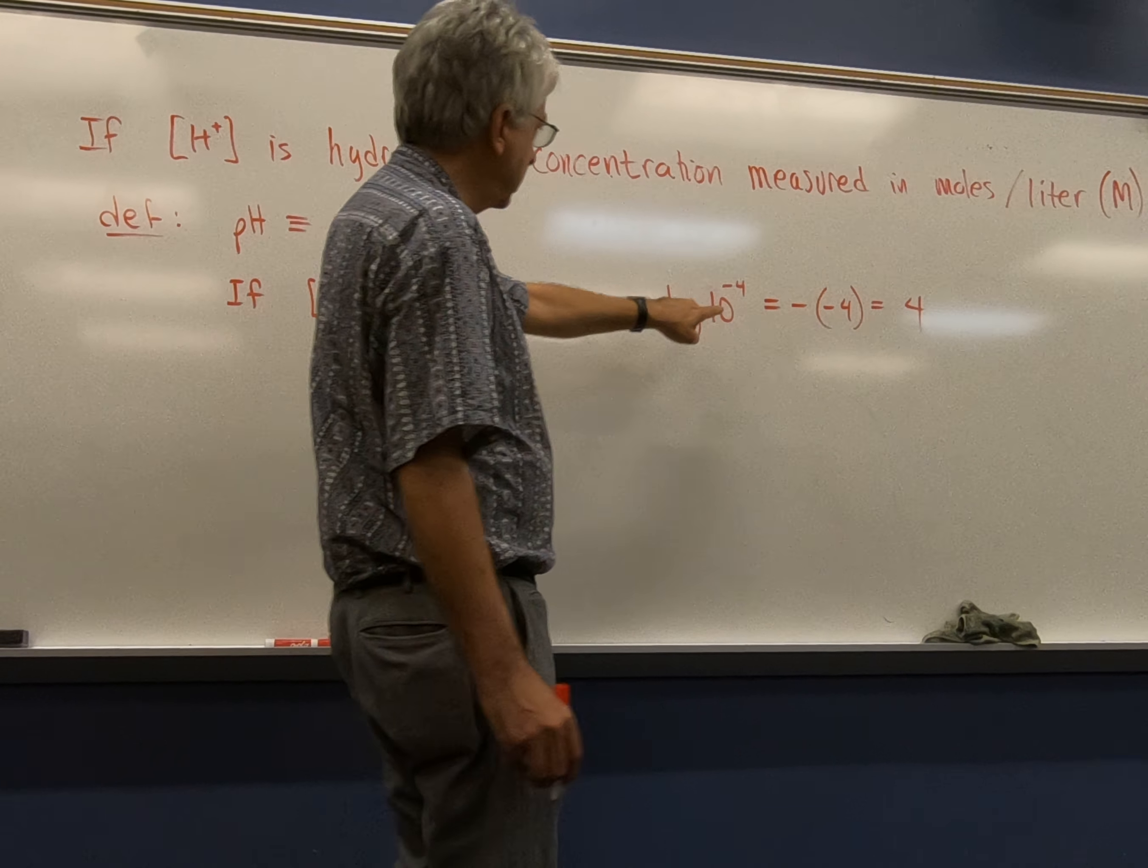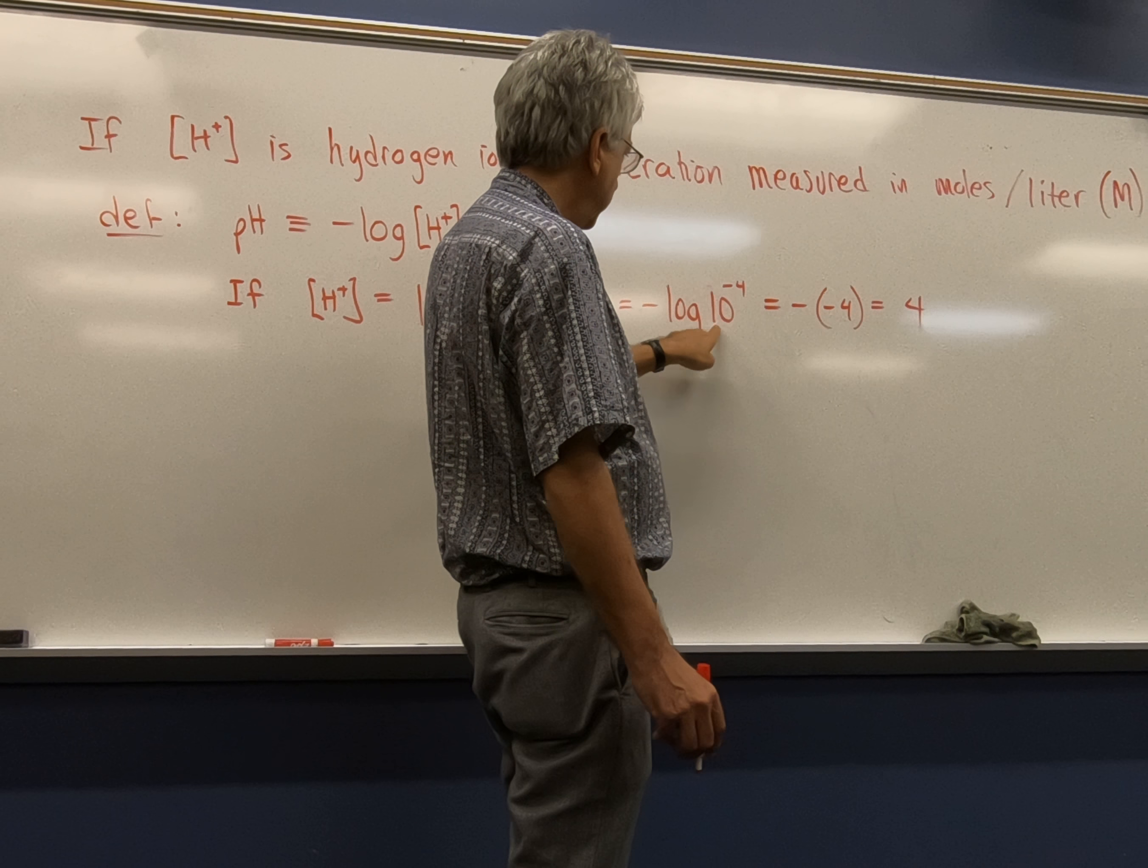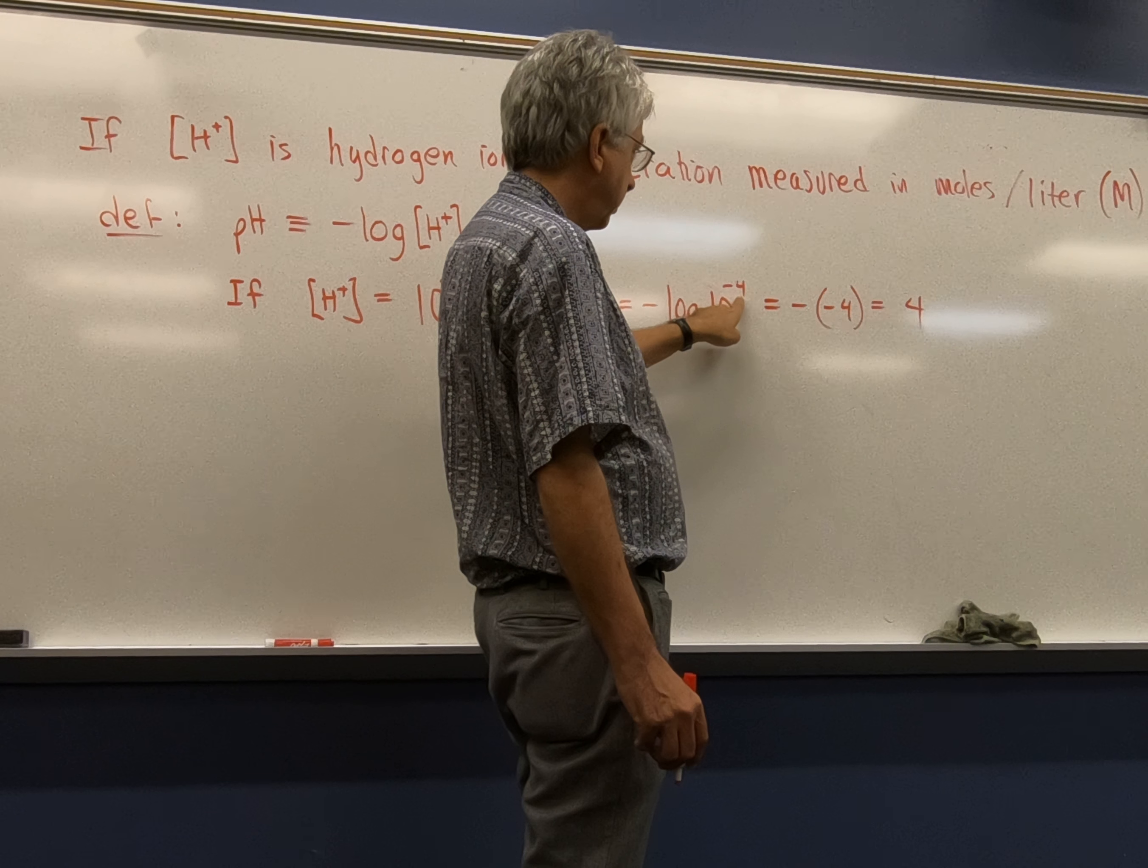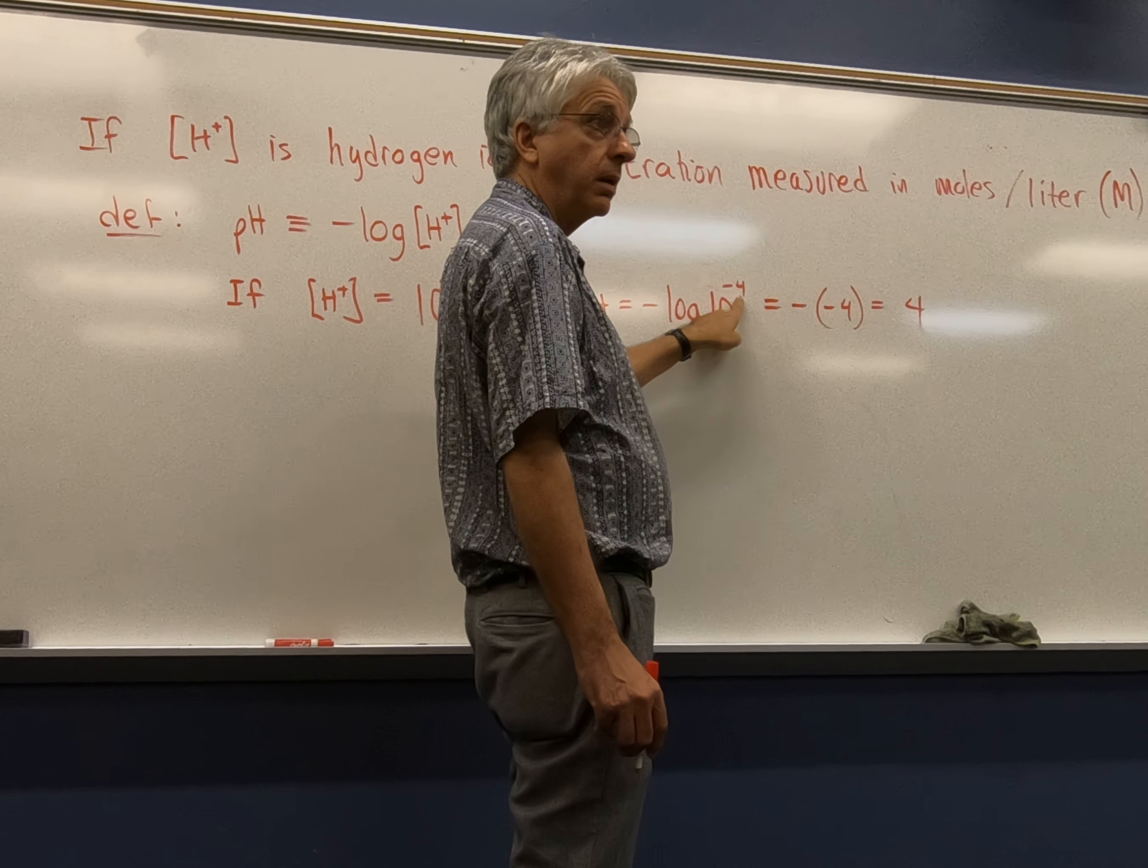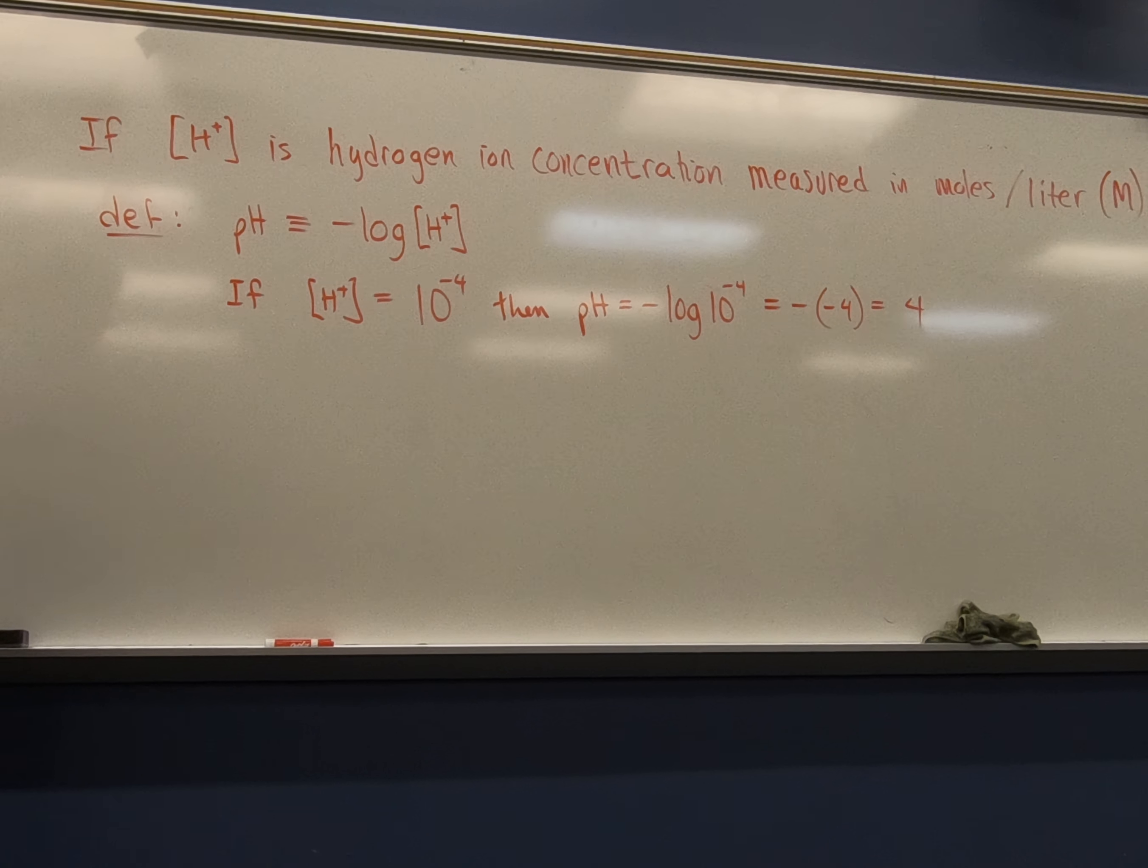So, if this concentration were one, say, 10 to the zero, then you'd have zero, pH of zero. And if you've got a substance with a pH of zero, it probably has eaten through whatever container you had it in, and then is eating through you.